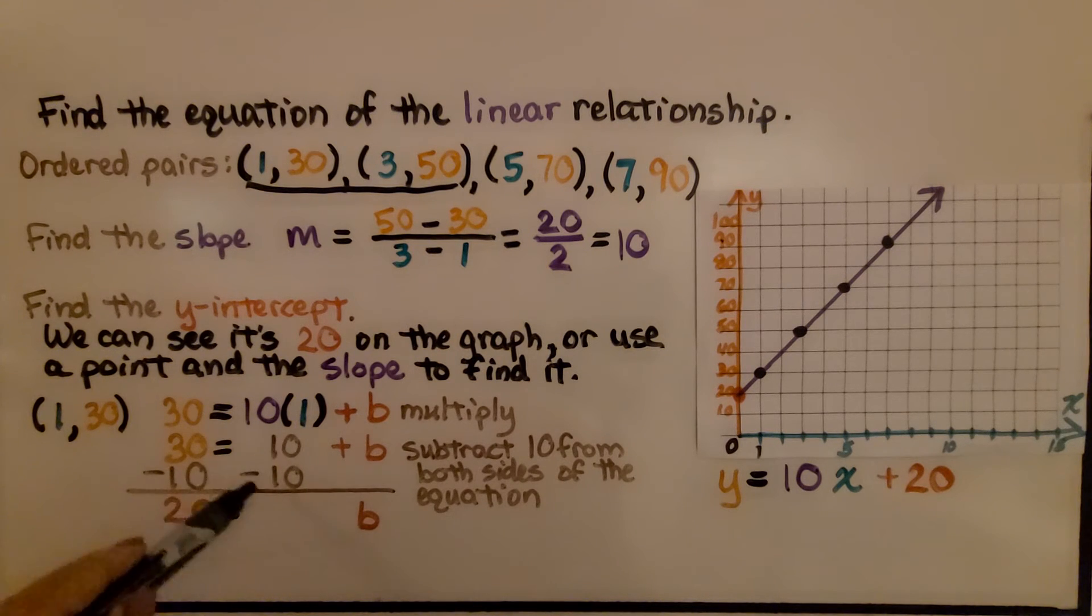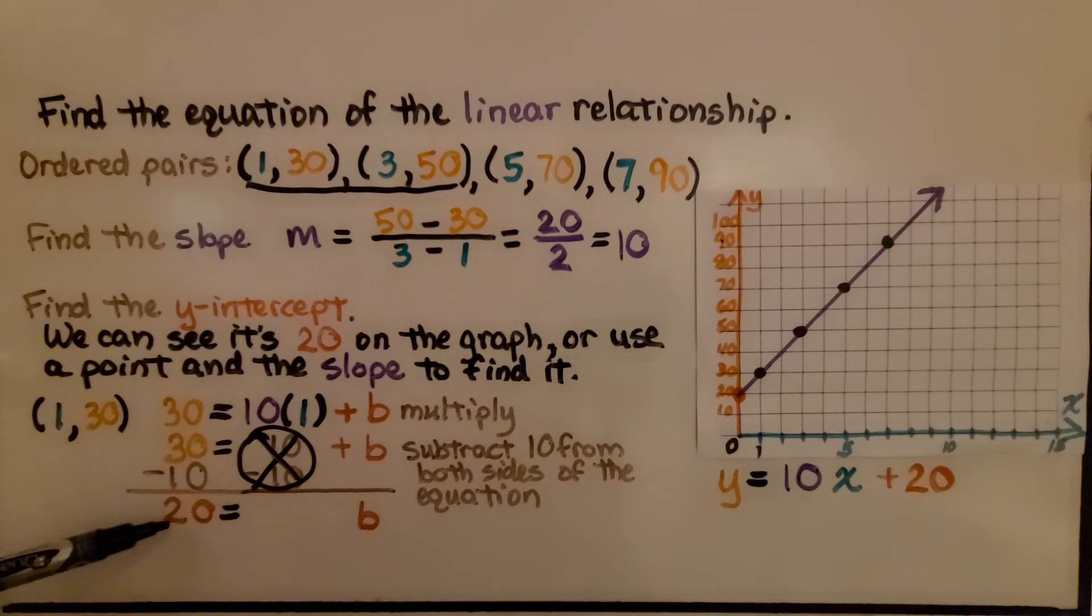Now we subtract this 10 from both sides of the equation to solve it algebraically. We have a plus 10 minus 10, a positive 10, negative 10. So that's going to create a zero pair and eliminate it. When we take 10 away from this side, we get a 20. We know our y-intercept b is 20. Now we can write the equation. We know that y equals 10x plus 20.